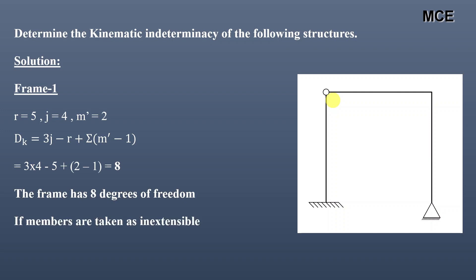If members are taken as inextensible, the value of DK is reduced by the number of members the frame has. This frame has 3 members, so the value of DK will be 8 − 3 = 5.